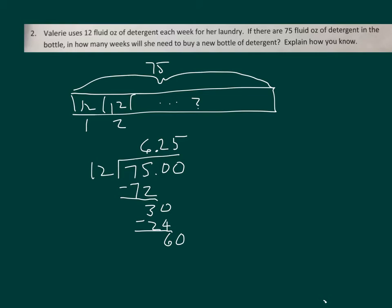There's 6 and a quarter 12s inside of 75. Meaning that she will have to buy a new detergent after how many weeks? Right, after 6 weeks.